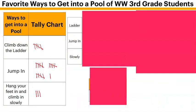Now we are looking at our graphing. We need to figure out how to build a picture graph. I've put tally marks here — this is all the information gathered from your favorites. You can see the title of my graph up top: Favorite Ways to Get into a Pool of Washington West 3rd Grade Students. Some of you have voted, and I tallied them up.